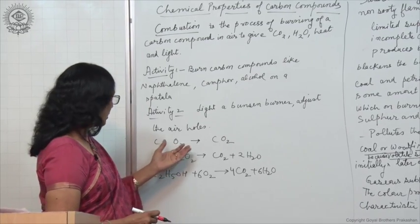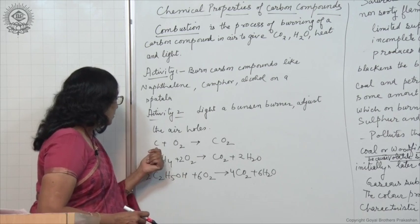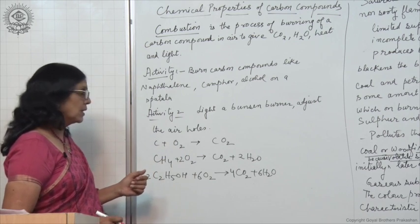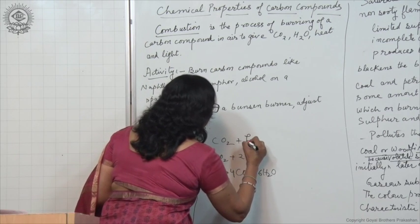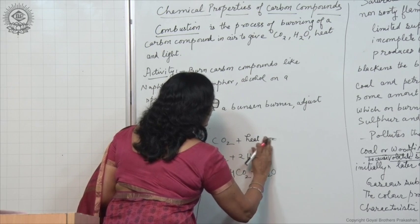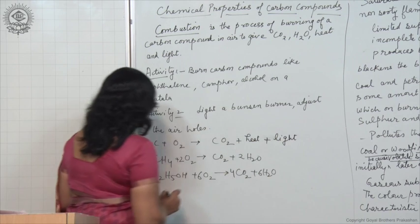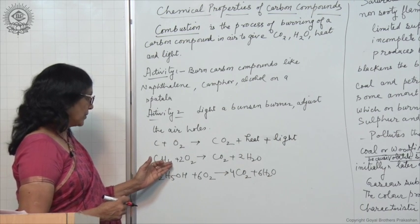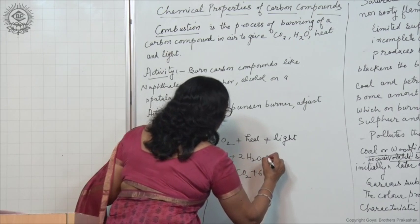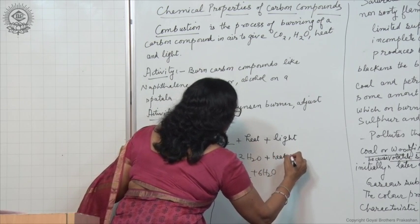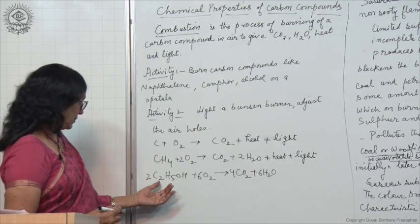Let us see the chemical equations to show the combustion of carbon and carbon compounds. Carbon burns in air, which contains oxygen, and forms carbon dioxide, heat and light. Similarly, methane (CH4) burns in air and combines with oxygen to form carbon dioxide, water, heat and light. Alcohol — this is ethanol —